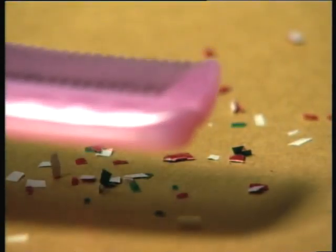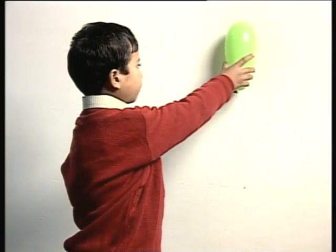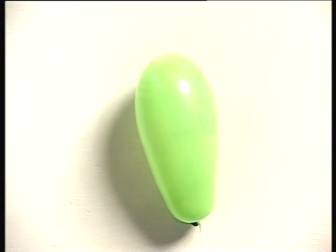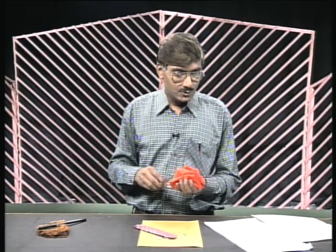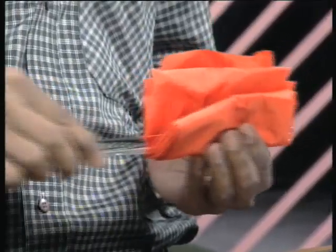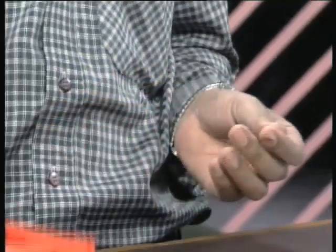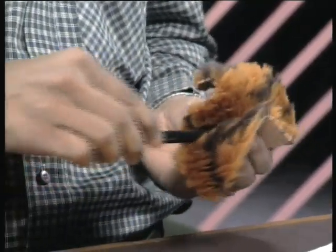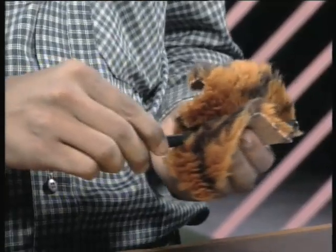Have you ever heard the crackling of electricity on a dry day with a dry comb? Why does this comb attract small pieces of paper? Why does a balloon rubbed with a woollen sweater stick to the wall? Similarly, a glass rod rubbed with a silk cloth or an ebonite rod rubbed with a woollen cloth is able to attract small pieces of paper.